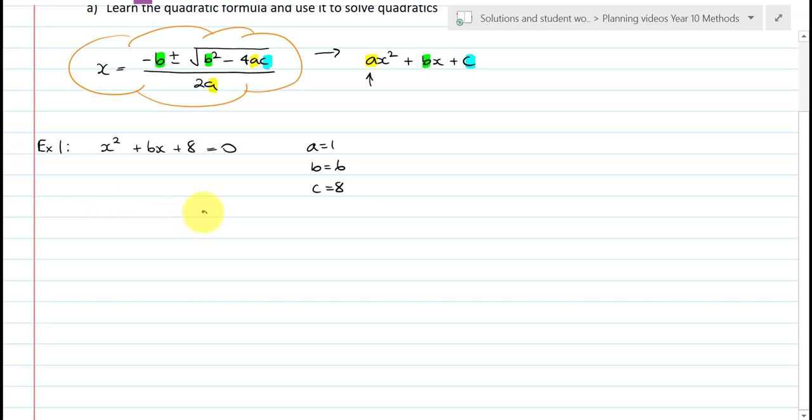And so, therefore we get this. x is equal to negative b, which is negative 6, plus or minus the square root of b squared, 6 squared, minus 4 times 1 times c, which is 8, all over 2 times 1. And so, this is equal to negative 6, plus or minus, you'll find you're not doing a lot of work on the inside here. 36 minus 32, over 2, which is negative 6 plus or minus the square root of 4, over 2.